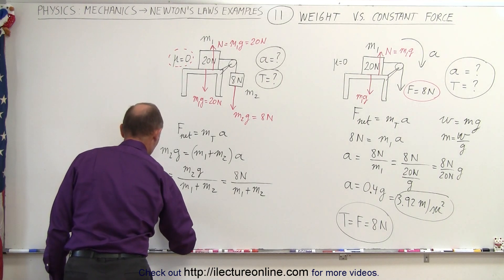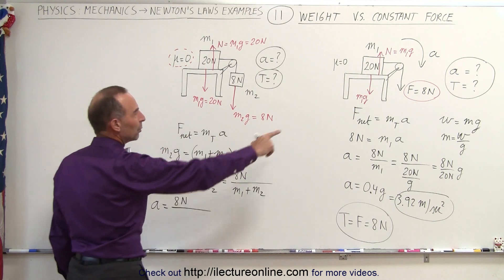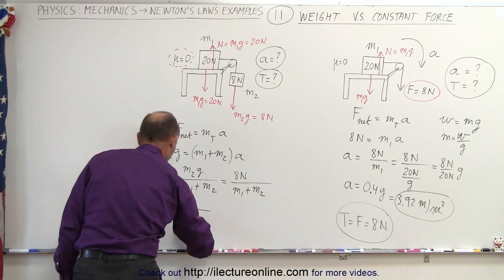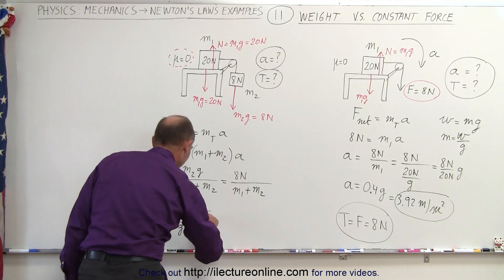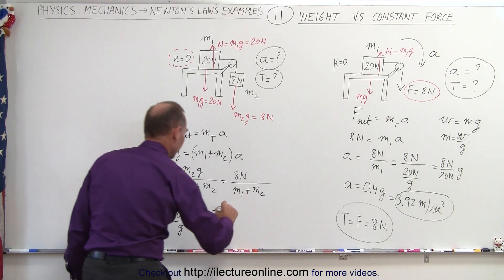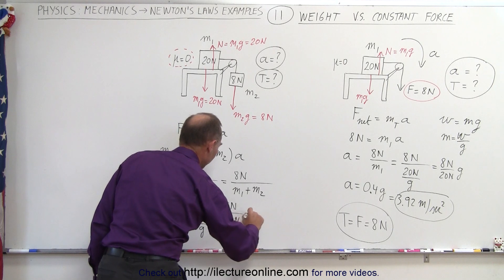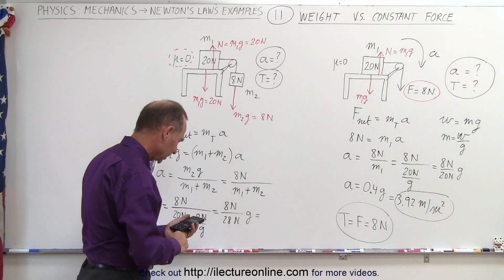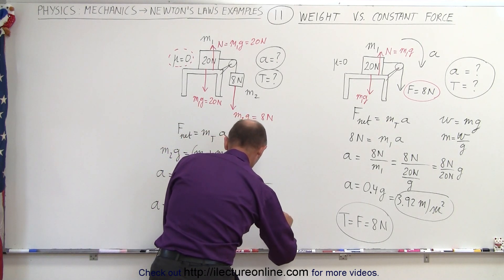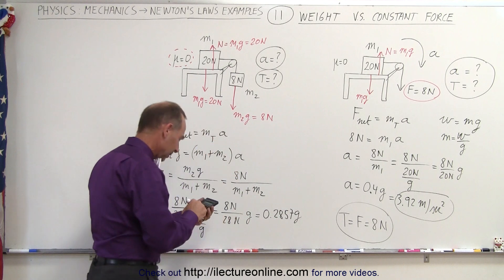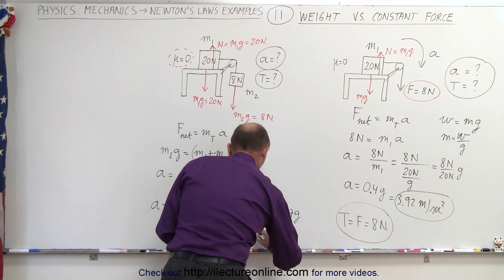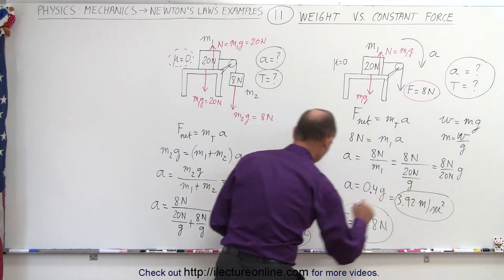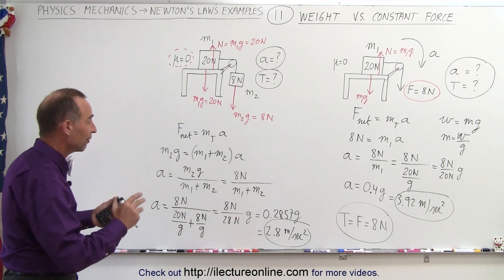Calculating the acceleration: A equals 8 newtons divided by the sum of the masses, converting from weights. M1 is 20 newtons divided by g, and M2 is 8 newtons divided by g, giving 8 newtons divided by 28 newtons times g, which equals 0.2857g. Multiplying by 9.8 gives 2.8 meters per second squared. So instead of 3.92 meters per second squared we get only 2.8 meters per second squared — a very different acceleration.